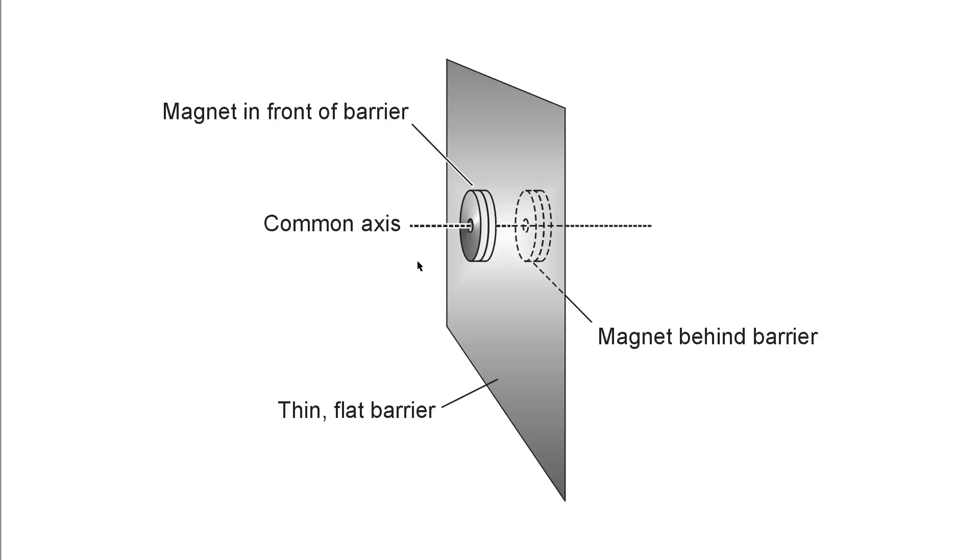But what about metals? A metal such as aluminum foil, or a steel plate, or a copper plate, which metals will allow magnetic fields to penetrate, and which materials will block them? I tested several different objects to find out what would happen.